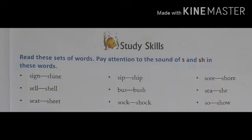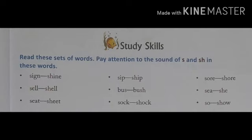Another one is S, E, A, T — Seat. Seat matlab baitnay ki jagah — koi bhi baitnay wali jagah jaise chair wagera ko bola jata hai seat. And another one is S, H, E, E, T — Sheet. Sheet matlab koi bhi — jaise bed sheet matlab chaddar, ya phir paper, page wagera ko bola jata hai sheet. Another word is S, O, C, K — Sock. Sock matlab socks — jo aap log apne pair mein pehante hain — Hindi mein usko mozey bolte hain. And another word is S, H, O, C, K — Shock. Shock matlab sadma lagna, ya phir electric shock — jab current lagta hai usse bhi bola jata hai.